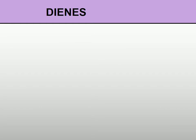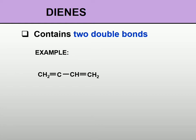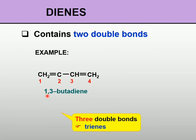What happens when the compound contains 2 double bonds? We will use the prefix 'di' to represent 2 double bonds. Based on this structure, I have a double bond at carbon 1 and carbon 3. So the parent will be 1,3-butadiene. Remember, the position of the double bond must always be mentioned. If there are 3 double bonds, it will become a triene.